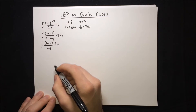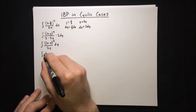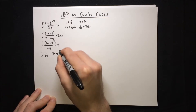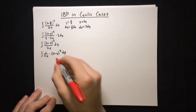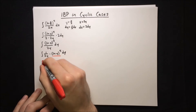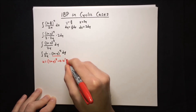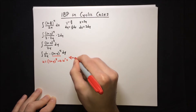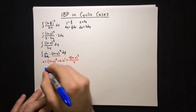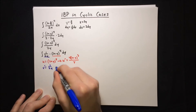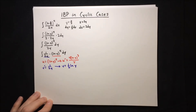Now we're ready to do integration by parts. We'll rewrite the integral as 1 over 2y times ln(y^4) dy. We choose u equals ln(y^4), so u prime equals 4 ln(y^3) over y. And v prime equals 1 over 2y, which means v equals half ln(y).